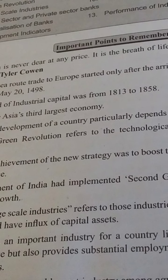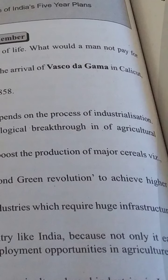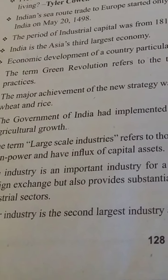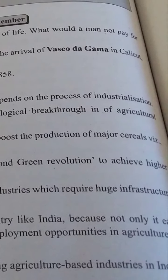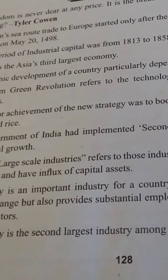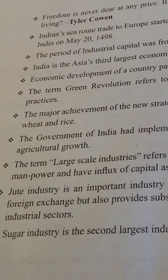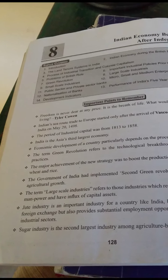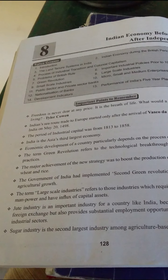The government of India implemented a second Green Revolution to achieve higher agricultural growth. The term large-scale industries refers to those industries which require huge infrastructure, manpower, and a large influx of capital assets — very high level land and infrastructure. That is large-scale industries, and small-scale industries operate at a small level.